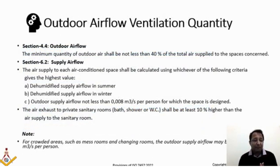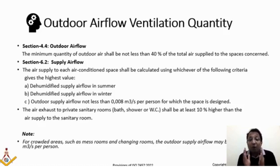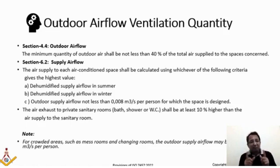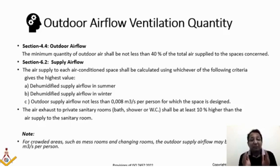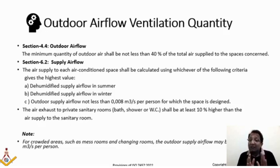Section 4.4 talks about outdoor airflow. The minimum quantity of outdoor air shall not be less than 40% of the total air supplied to the space concerned. This is an important clause — when calculating the marine air conditioning system, the outdoor air requirement must be a minimum of 40% of your total supply air. It clearly states 'shall not be less than' — not 'may not be less than.' Shall. 40%. End of story.